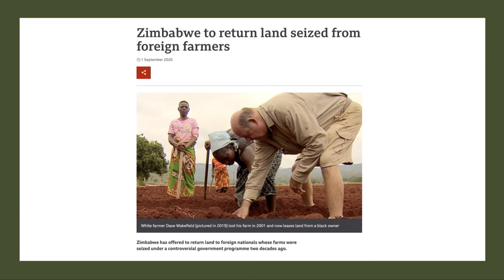If we think about the example of Zimbabwe 20 years ago — land was seized by Mugabe's regime from predominantly white farmers. Zimbabwe, 30 or 40 years ago, was one of the richest countries in sub-Saharan Africa and had one of the most productive and viable farm sectors — fertile soil. And now they've really struggled; farm productivity in Zimbabwe has collapsed, in part because of arbitrary land seizures.